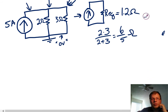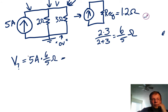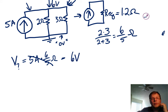Now we have room to apply Ohm's law. We have some unknown voltage up at the top node that we want to find. V equals IR, so V equals 5 amps times 6 over 5 ohms. The fives cancel, and our voltage equals 6 volts. So up here we have 6 volts.